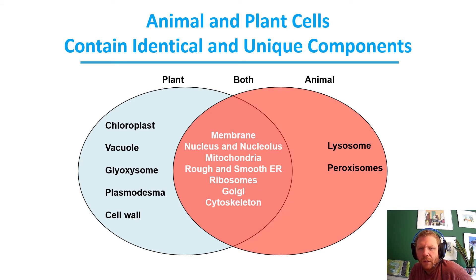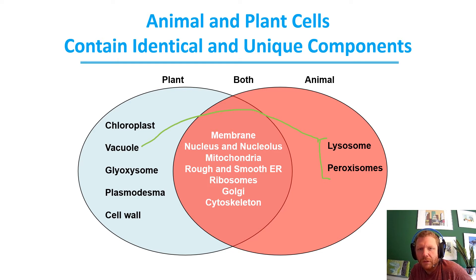It's almost like the vacuole does the activities of the lysosome and the peroxisome. So aside from the chloroplast, plants and animals kind of go through the same things.